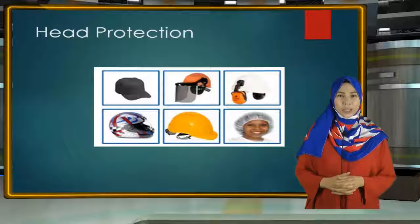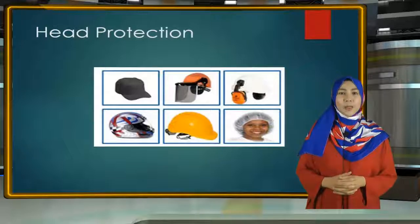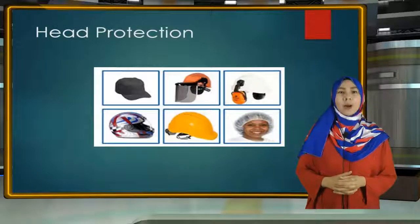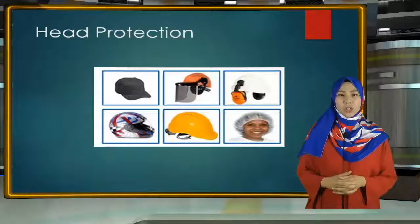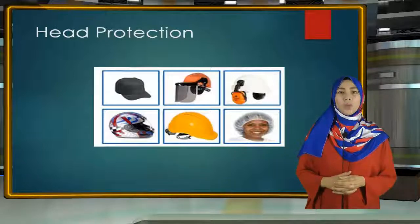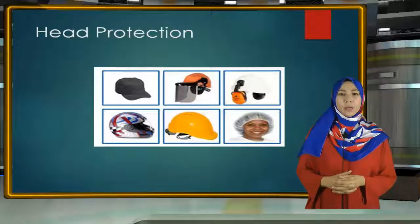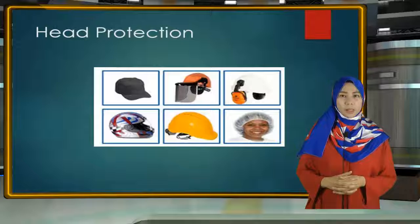Head Protection: Protective helmets or hard hats are worn in order to prevent potential head injuries. They are designed in such a way that they are able to absorb the shock of a blow and resist penetration by objects. These protective head gears are also water-resistant and slow-burning.